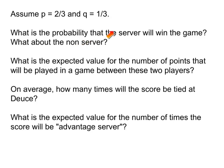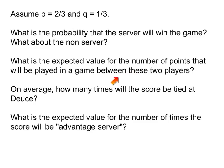Here are examples of questions of interest to solve. Once you have numerical values for P and Q, you can determine the probability that the server will win the game. You can compute the expected number of points played in the game — on average, how long will the game go? And you can find on average how many times the score will be tied at deuce. These are the kinds of things you can extract from the matrices N and B.